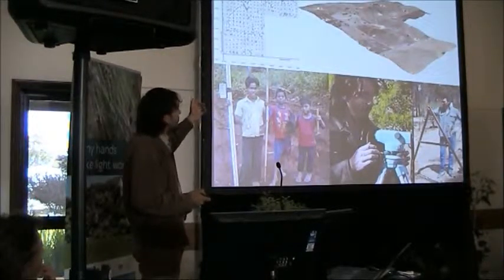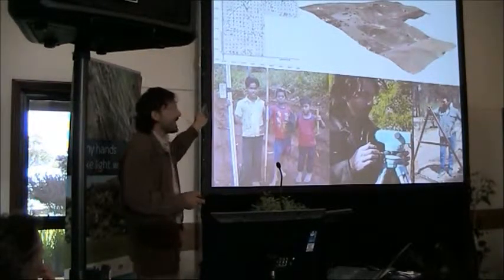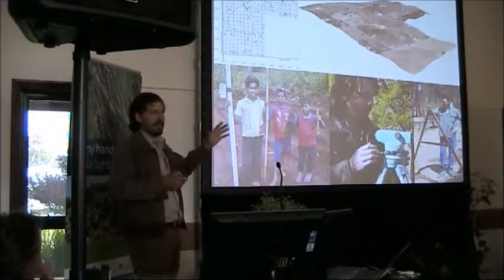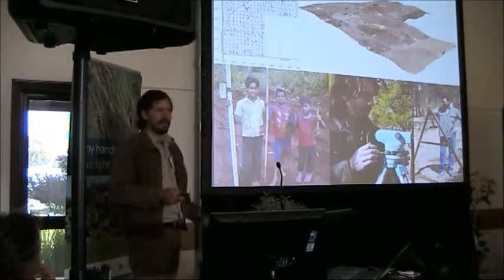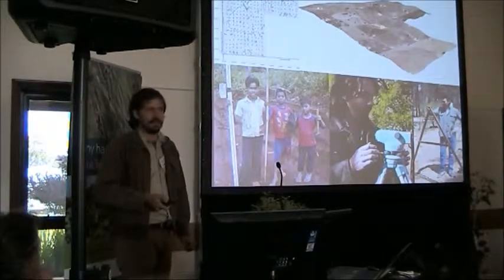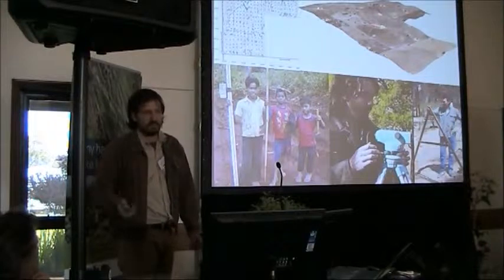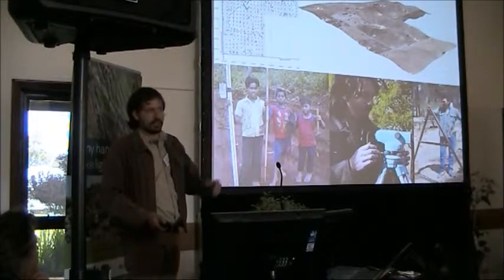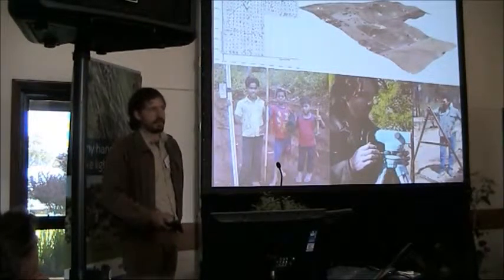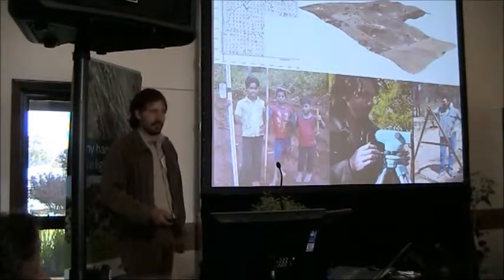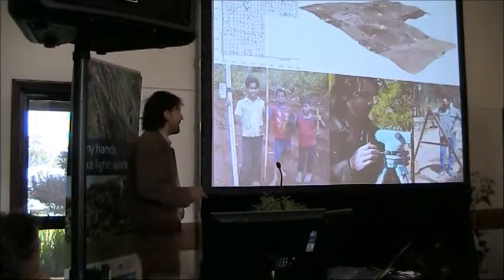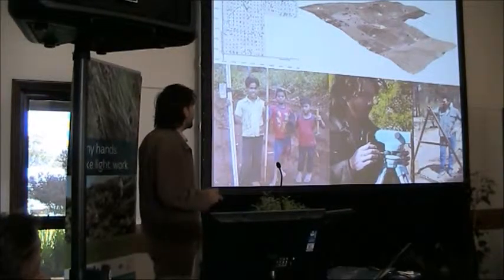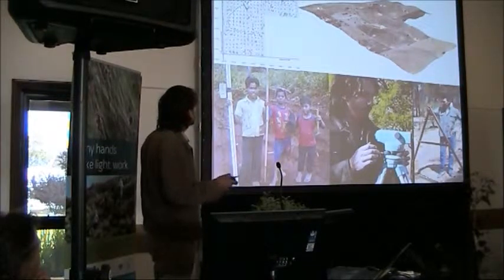Nowadays, with the likes of RTK photogrammetry and topographical mapping, you can get contour maps down to the millimetre if you choose. That technology is becoming more and more available and cheaper all the time, assisting us in really high-quality design.